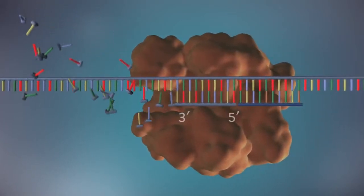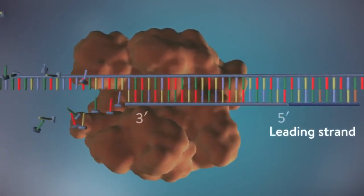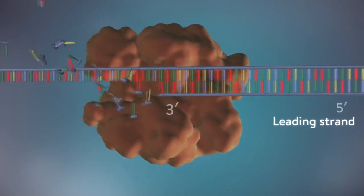One of the new strands of DNA, the leading strand, is made continuously, the DNA polymerase adding bases one by one in the 5' to 3' direction.